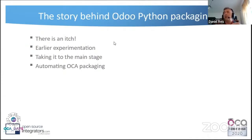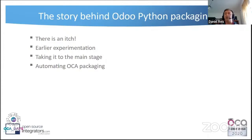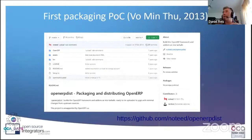What's the story behind Odoo packaging? The early problem was that Odoo was not a good Python citizen. Any Python framework is expected to work well with pip — you can pip install Django and it works. That didn't apply to Odoo. It was not a concern for Odoo, and it's still not at the top of their priorities, but it's something that needed to be solved.